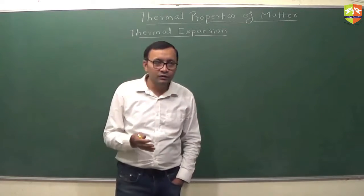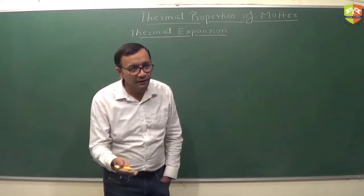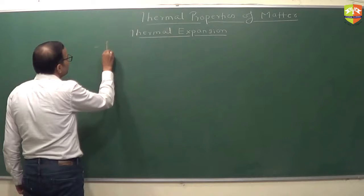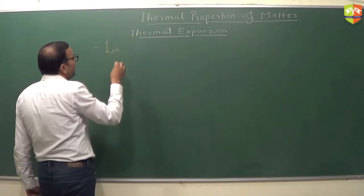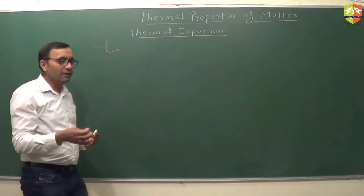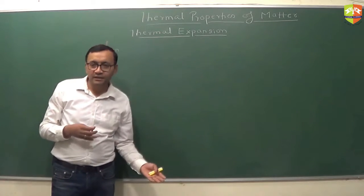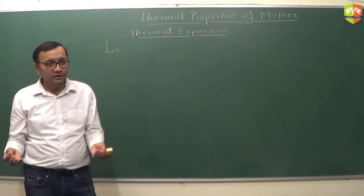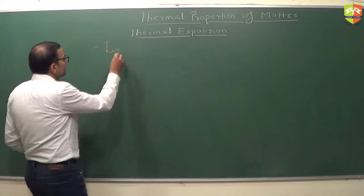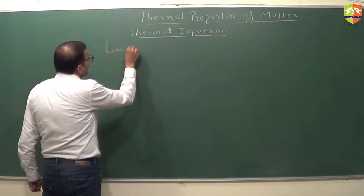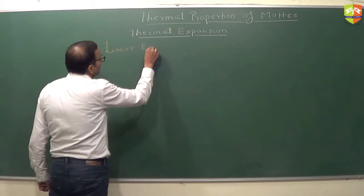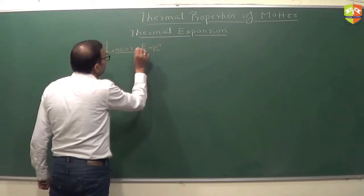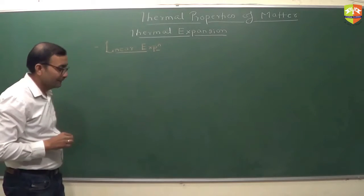First, we will take the most simplistic scenario, that is linear expansion. Write down linear expansion. In a way, area is nothing but the multiplication of two linear dimensions, so if linear expansion is there, area expansion is there anyway. And if area expansion is there, volume expansion is there anyway — they are all interlinked.